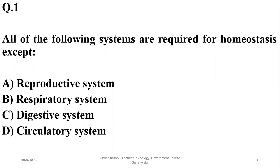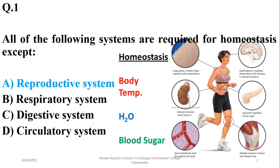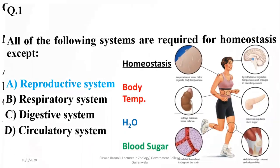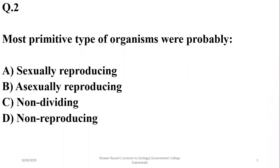All of the following systems are required for homeostasis except — we know that except for the reproductive system, all systems are needed for homeostasis. So the right option will be alpha. The reproductive system is not a basic requirement for the maintenance activities of an individual; all other body systems work for various types of maintenance activities.